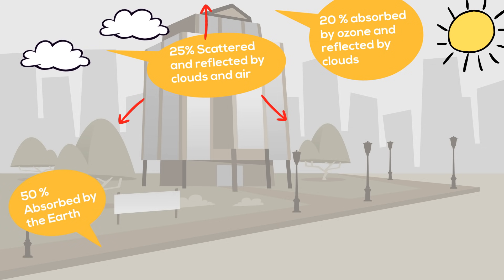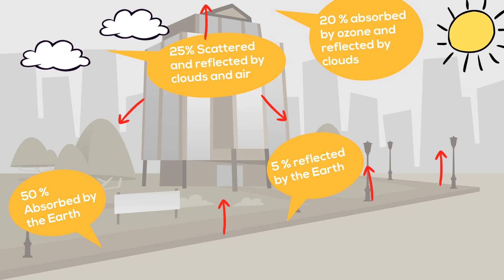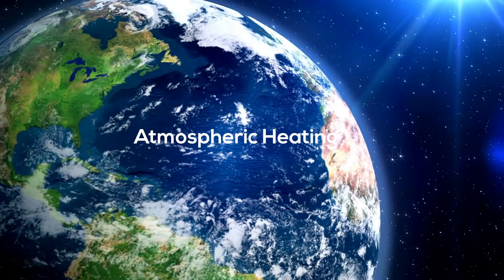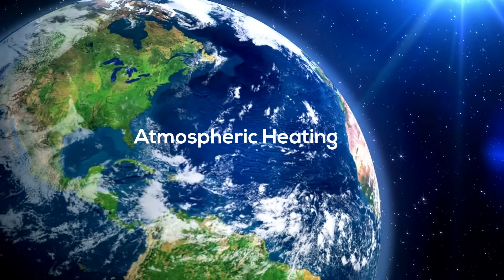About 50% is absorbed by the Earth's surface, and 5% is reflected by the Earth's surface. So all of this working together — the radiation, the conduction, the convection — and the sun's energy being either reflected, scattered, or absorbed causes atmospheric heating.